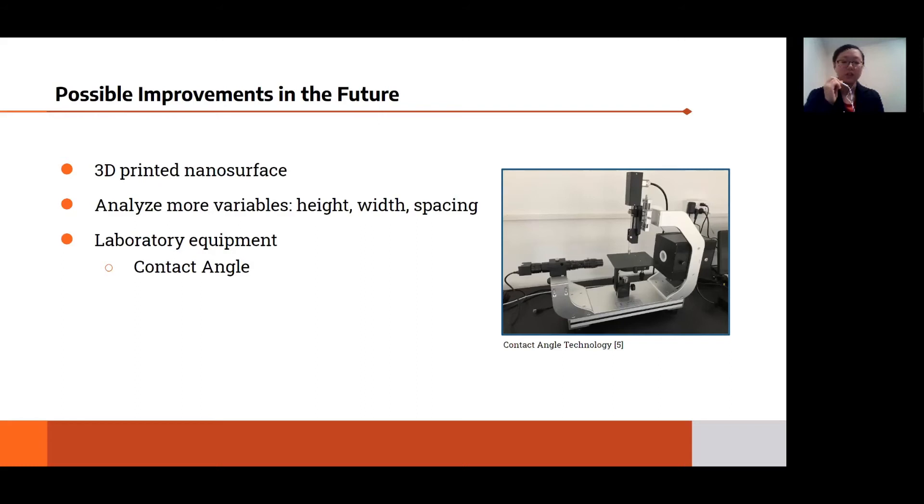Finally, in order to make sure our data is more sophisticated, we could use lab equipment such as the contact angle measurer to eliminate human error in our measurements. With all these improvements, our experiment could be much more refined.